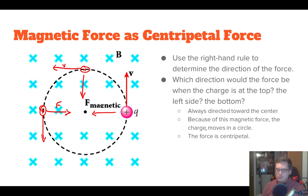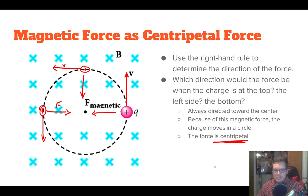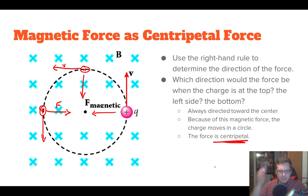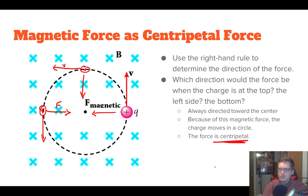Because the magnetic force always points toward the center, it acts as a centripetal force, making the charged particle move in a circle. This is actually how particle accelerators like the Large Hadron Collider work — they're too small to tie to a string, so scientists use magnetic fields. As the charged particles move, they get turned by the magnetic fields. Large electromagnets allow you to change the current to change the magnetic field strength and control how much the particles turn.